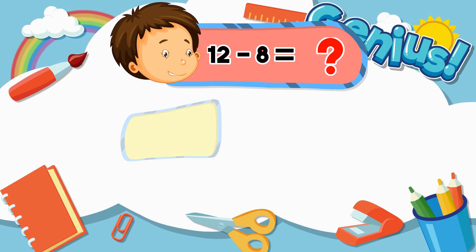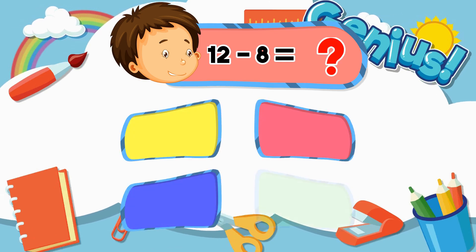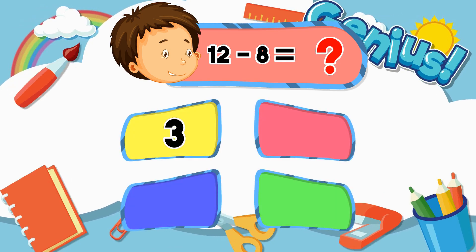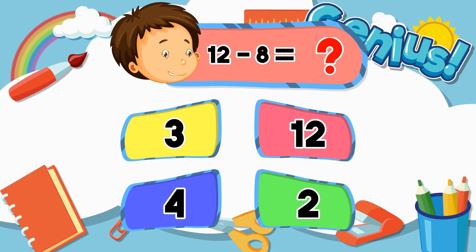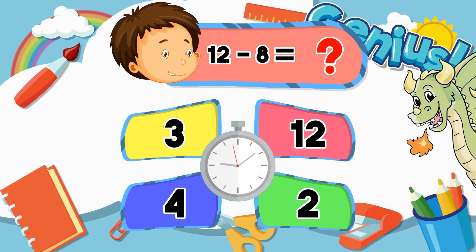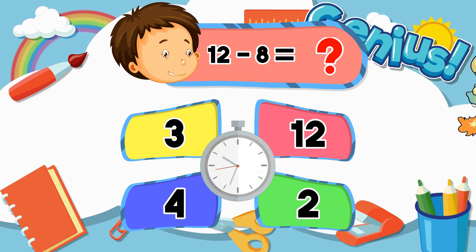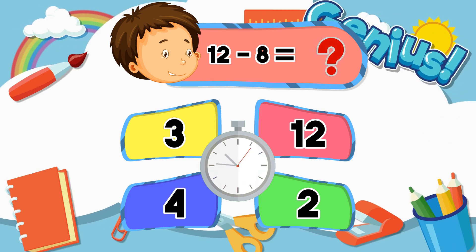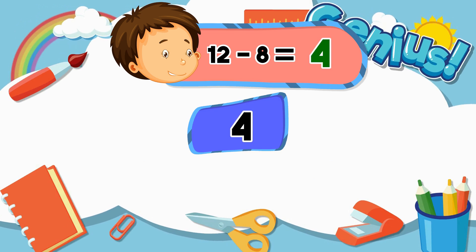What is twelve minus eight? Three, twelve, four, two. Four.